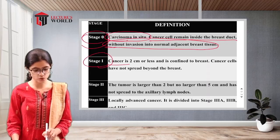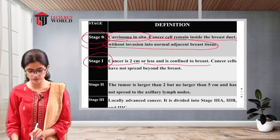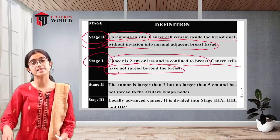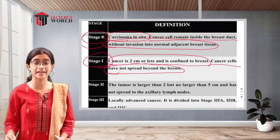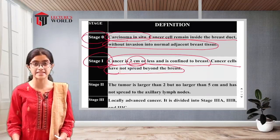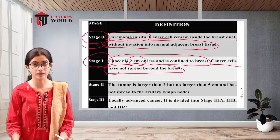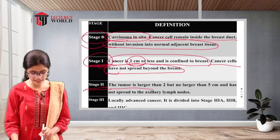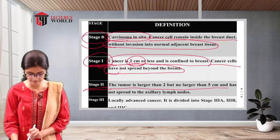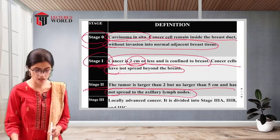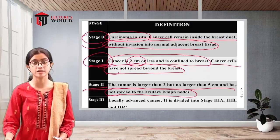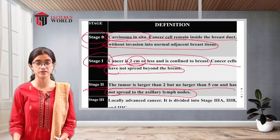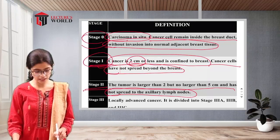Stage 1: the cancer is 2 cm or less and is confined to the breast; cancer cells have not spread beyond the breast. Stage 2: the tumor is larger than 2 cm but no larger than 5 cm and has not spread to the axillary lymph nodes.